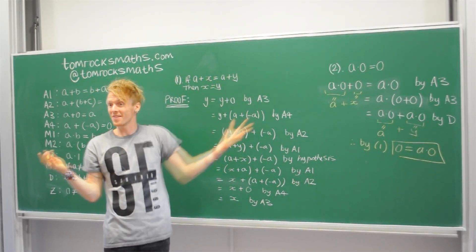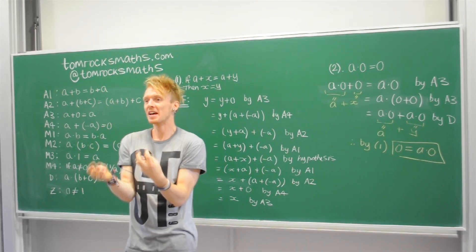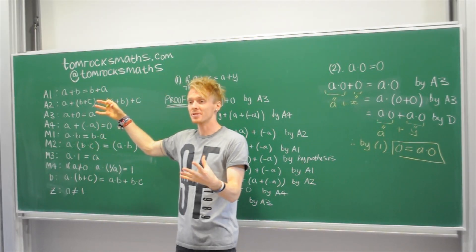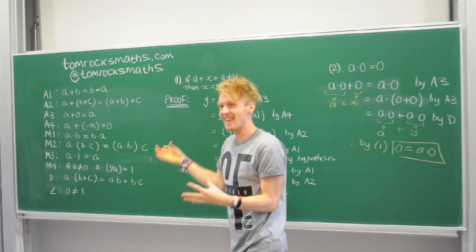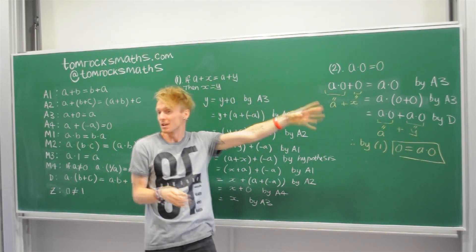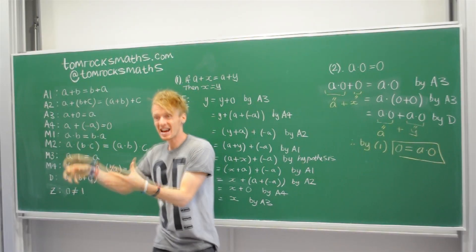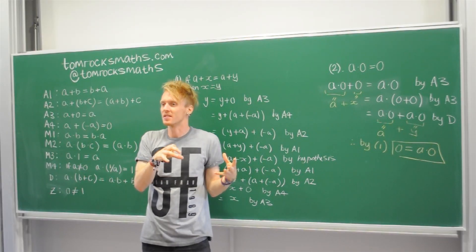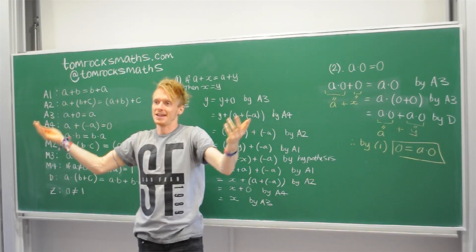So this hopefully gives you an idea of, we started with these axioms. We used these axioms to prove a result, number 1. And then, using that result, we then proved something a bit more complicated in number 2, using that result plus our axioms. So you can see how everything's building on top of everything. And you can just continue like this and eventually get to all of maths.